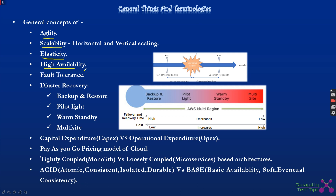High availability means designing our applications in a highly available fashion — whenever there is a disaster, our application must still be running. Fault tolerance means designing our application so that even if some failure happens to the system or application, it must be up and running at all times. Disaster recovery covers scenarios like a calamity caused by a cyclone or other events in a specific area — even then, our application needs to be up and running.